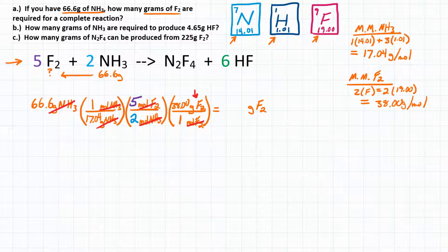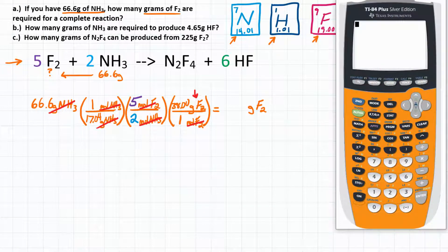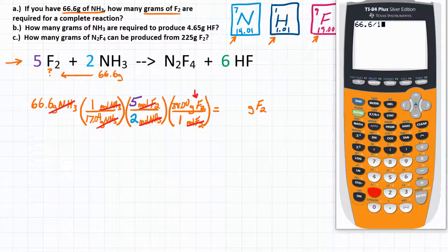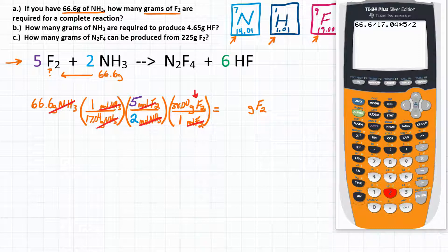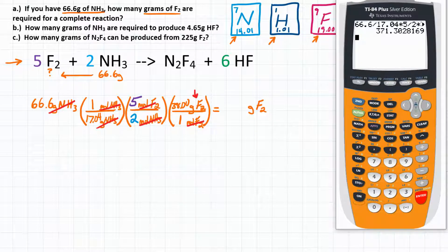Now let's do the math to see how many grams of F2 we end up with. We calculate: 66.6 ÷ 17.04 × 5 ÷ 2 × 38.00. Our calculator gives approximately 371, so our answer for part A is about 371 grams of F2.